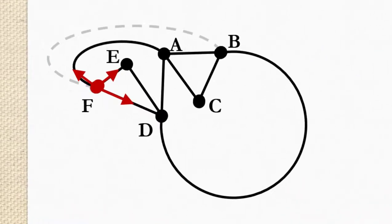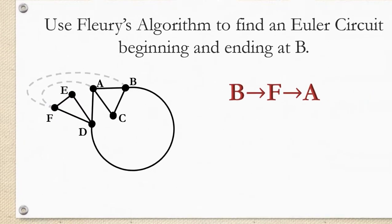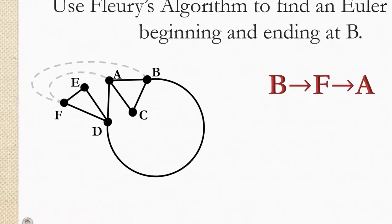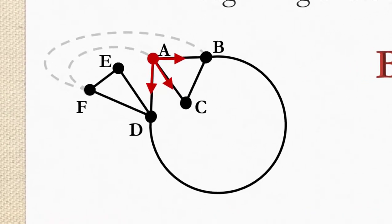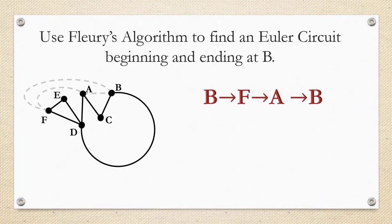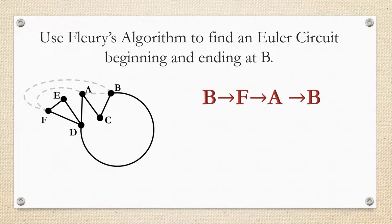From vertex F I have three options. I can go towards A, E, or D. None of them appear to be a cut edge so it's really up to me. So I'm going to choose A. So removing that edge and recording it, from A I can go toward B or C or D. Again I don't think any of these if I removed them would separate the graph into two components so that's up to me. I am going to decide to go towards B. So I'm going to write that down and I'm going to remove it from the graph.